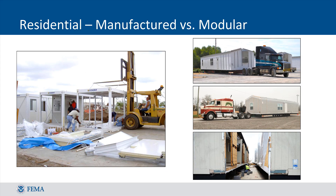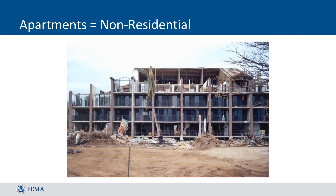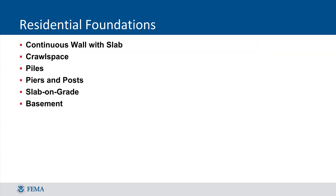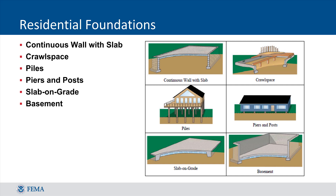One easy way to distinguish between a manufactured home and a modular home is to look at the framing. A manufactured home will generally have a metal frame while a modular home will typically have a wood frame. It is also very important to note that while apartment buildings do house residents, they are owned as businesses and therefore considered non-residential structures. Another important part of carrying out the SDE assessment is determining the structure's attributes, the first of which is foundation. Here you can see examples of the different foundation types, which can be used as a reference to help determine the foundation type of the structure being assessed when you are in the field.